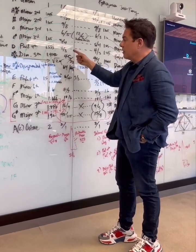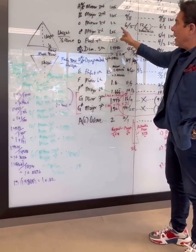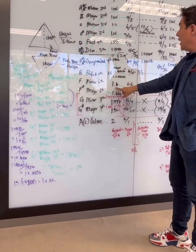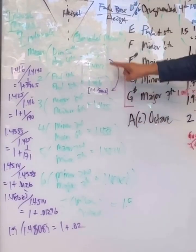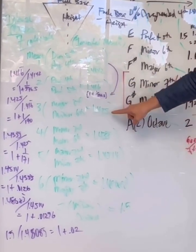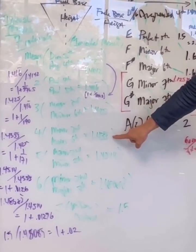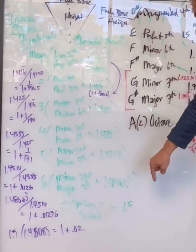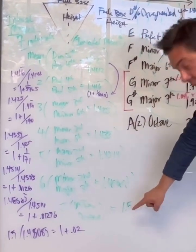If I continue this process, a pattern emerges. The major third (1.25) plus minor sixth (1.6) divided by 2 gives 1.425. So the progression is: square root of 2 (1.4142), then 1.416 repeating, then 1.425, then the minor third and major sixth gives 1.433 repeating, then 1.4514 for major second and minor seventh, then 1.4808 for minor second and major seventh, and finally the octave at 1.5.